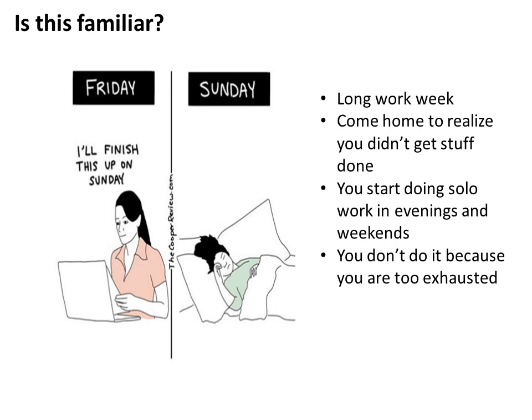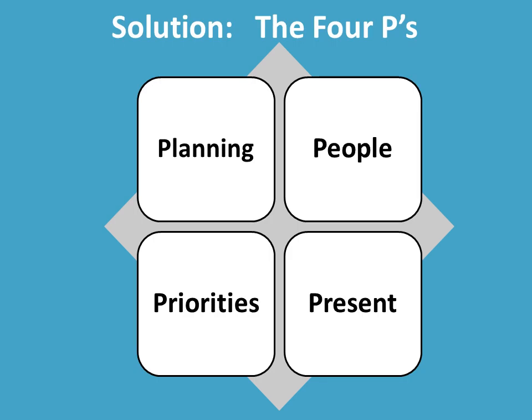Maybe this sounds familiar: you go through the week and realize you are not getting anything done because you have had all these back-to-back meetings and no solo time. So you start doing solo time during the evenings and maybe on the weekends, but you end up not doing it because you are too exhausted. How do we get out of this? It's called the 4 Ps: planning, people, priorities, and being present.